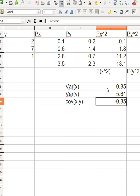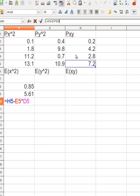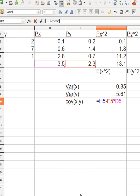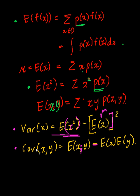Remember: variance of x can never be negative, but covariance can be negative. To recap: E[xy] was calculated as probability times x times y. Notice that the variance formula and covariance formula are analogous — for variance you use x-squared, and for covariance you convert one of the x's to y. You technically only need to remember one formula. That's it for this session — if you have any questions or comments, let me know. Thanks for watching.